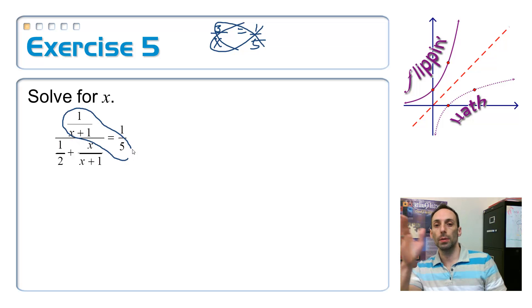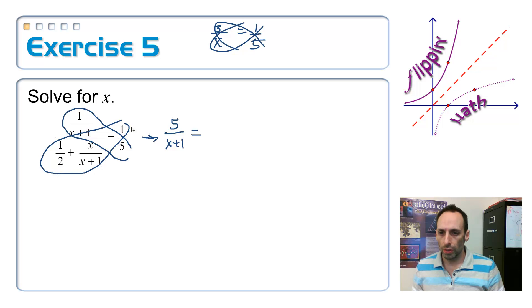It's 5 times the fraction 1 over x plus 1, which becomes 5 over x plus 1. Okay, and then the second cross product, which this has to be equal to, is 1 times the whole entire denominator, so it doesn't change. 1 half plus x over x plus 1.